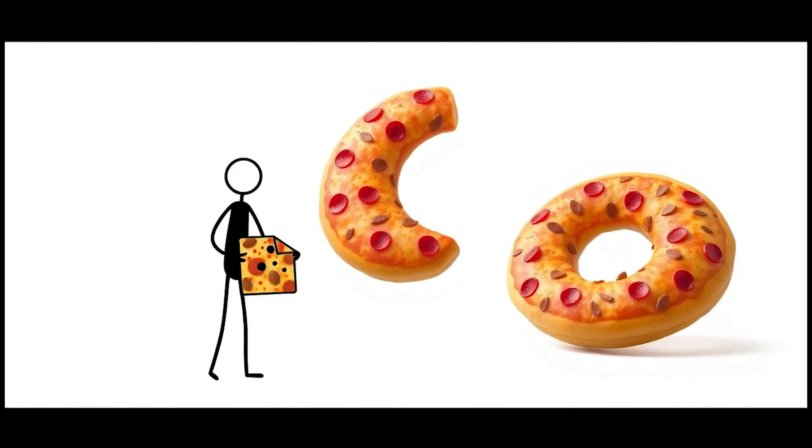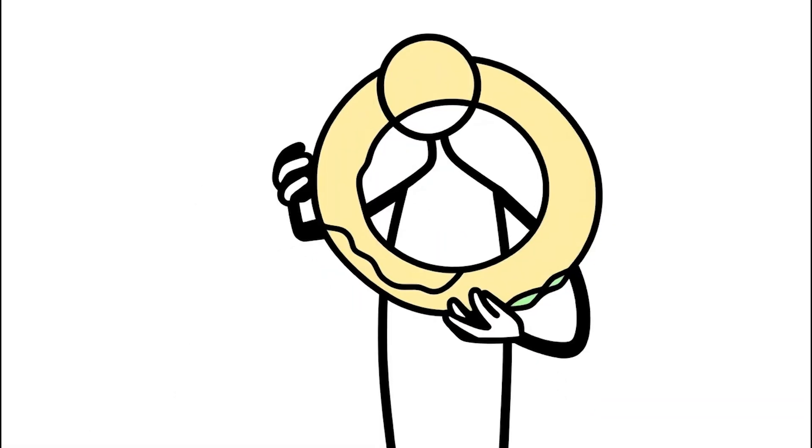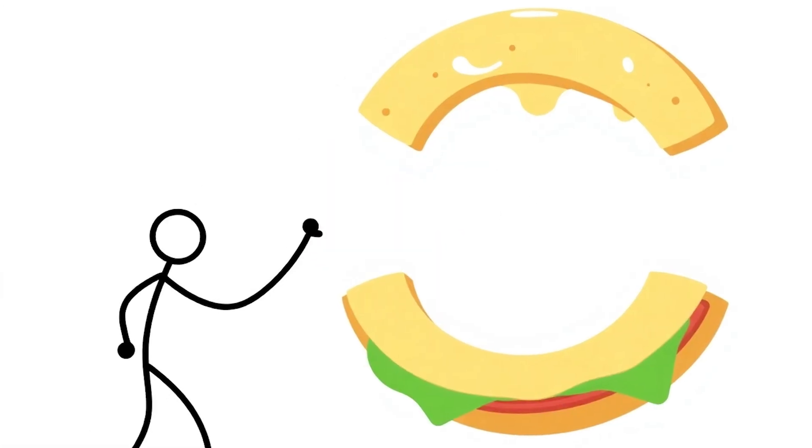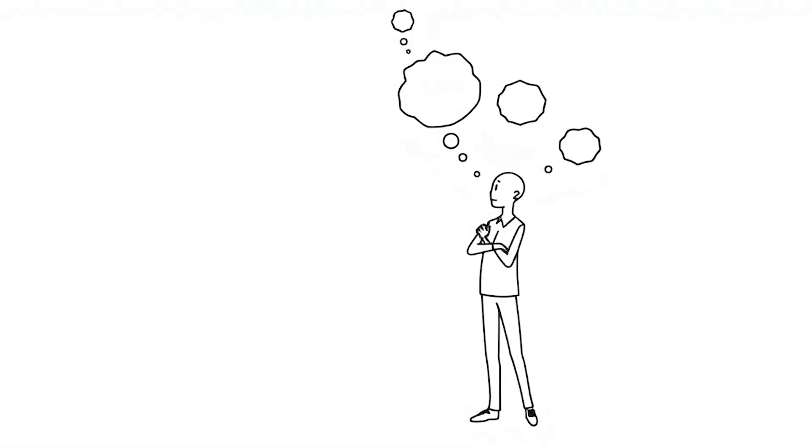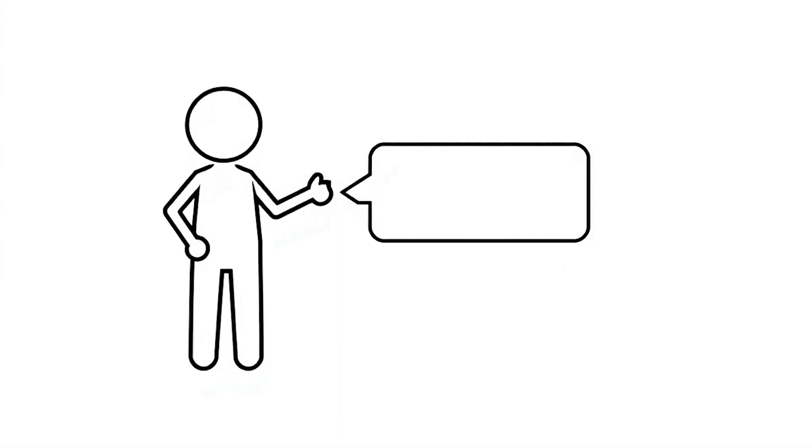But the biggest question is, would pizza still be flat, or would it follow the curve of our donut world? Maybe sandwiches would be ring-shaped to match our planet. What do you think would be the weirdest part about living on a donut-shaped Earth? Drop your thoughts below.